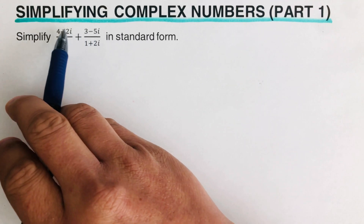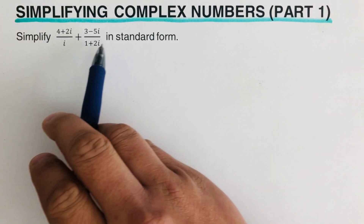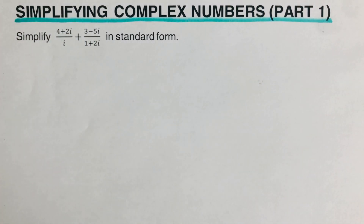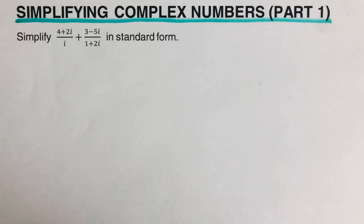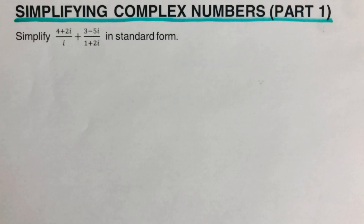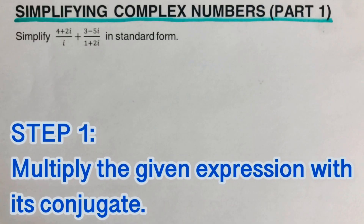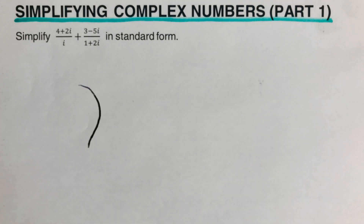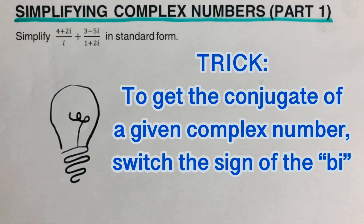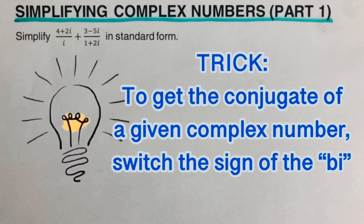We're supposed to simplify this expression in standard form — again, the standard form for a complex number is a plus bi. There are steps we need to follow to simplify complex numbers. The first step is to multiply the given expression by its conjugate. To get the conjugate of a complex number, we switch the sign of the bi part.